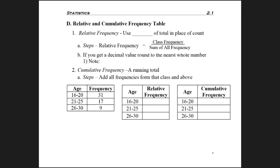So the first thing we want to look at is a relative frequency distribution, and this is where you use percent of total in place of the count. So instead of saying that there were 31 people age 16 to 20, we want to know what percent of the population was age 16 to 20. And so the steps for making the percent here are you take the class frequency and you divide that by the sum of all frequencies, so all the numbers in the list.